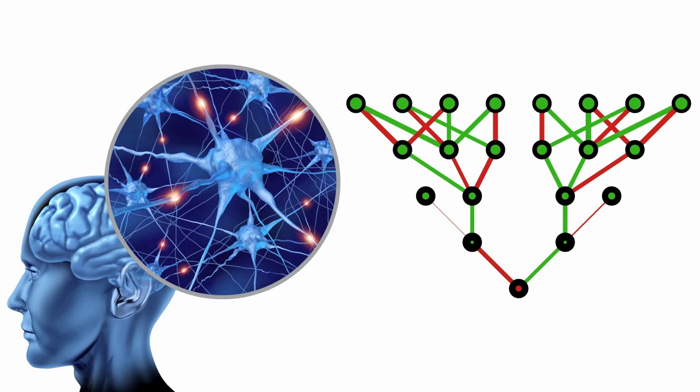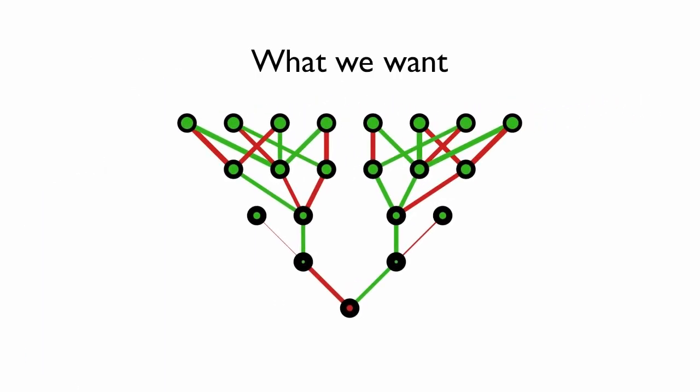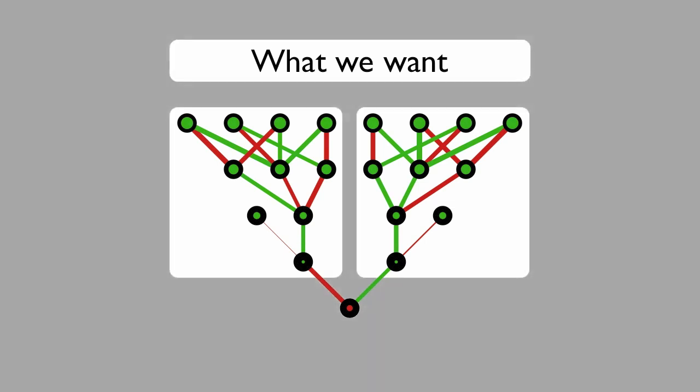When we evolve artificial neural networks to solve problems that are modular and regular, we want these networks to be modular and regular as well.